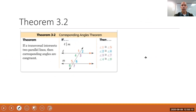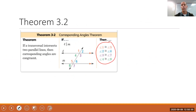Theorem 3.2: if a transversal intersects two parallel lines, then the corresponding angles are congruent. With two parallel lines cut by a transversal, all four corresponding pairs are congruent — angle 1 and angle 5 are congruent, angle 2 and 6 are congruent, and so on down the line. This is a very powerful theorem.